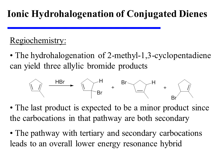To summarize this reaction, the hydrohalogenation of 2-methyl-1,3-cyclopentadiene can yield three allylic bromide products.